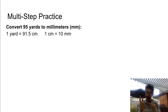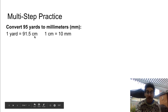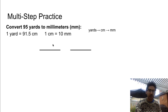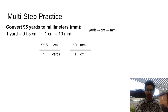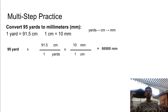Try this practice — pause the video. We're converting yards to millimeters. Game plan: yards → centimeters → millimeters. First fraction: centimeters on top, yards on bottom. Second fraction: millimeters on top, centimeters on bottom. Plug in conversion factor numbers. Calculate: 95 times 91.5 divided by 1 times 10 divided by 1. Yards cancel, centimeters cancel, leaving a large number of millimeters — expressible in scientific notation.